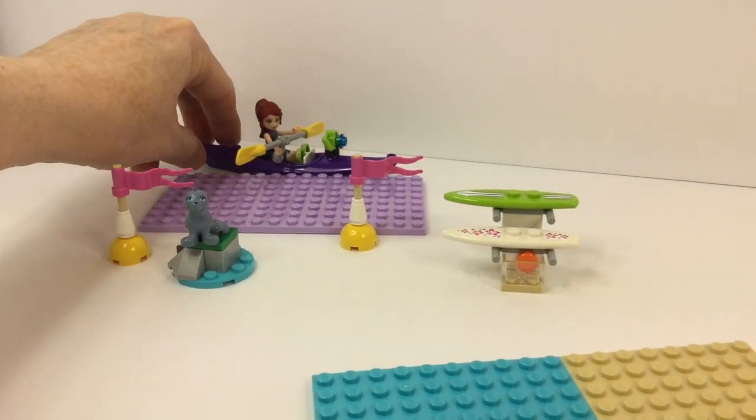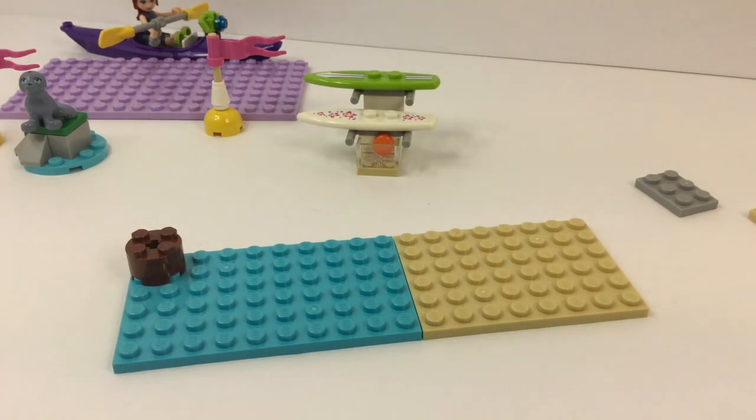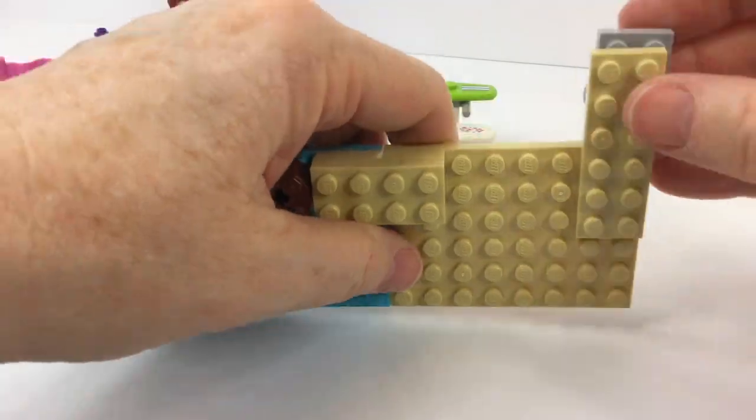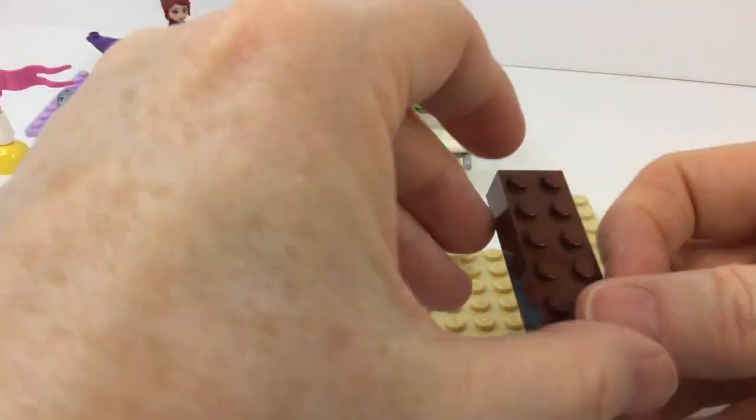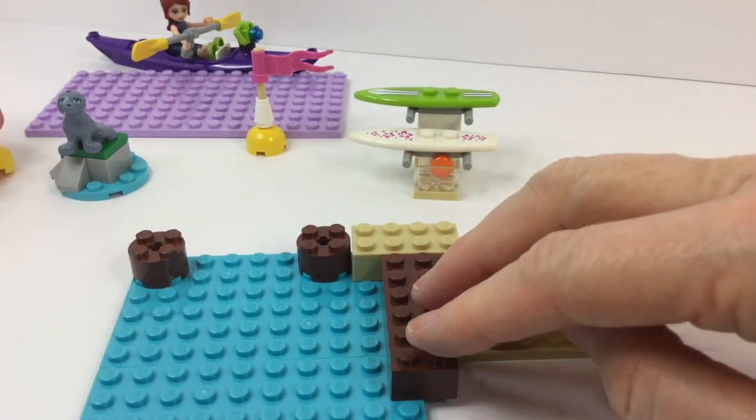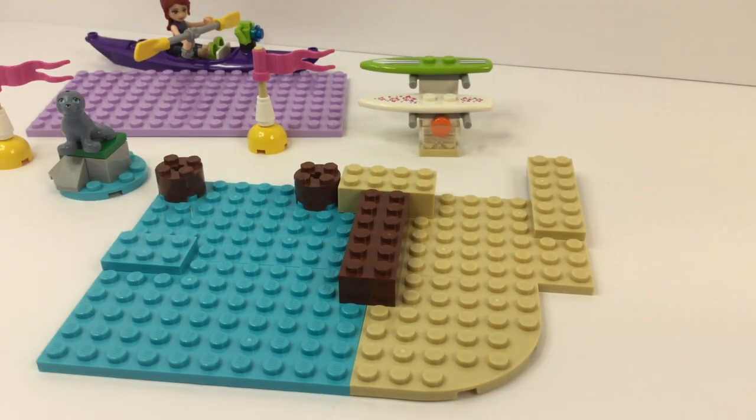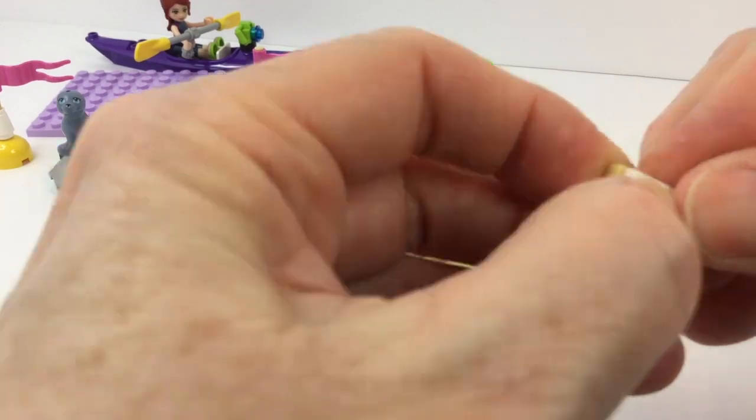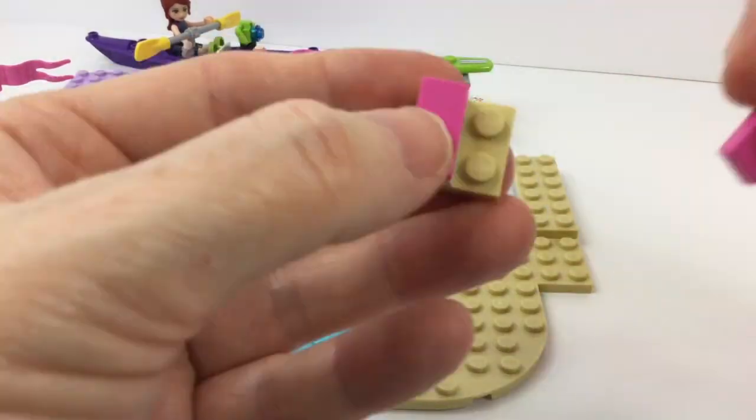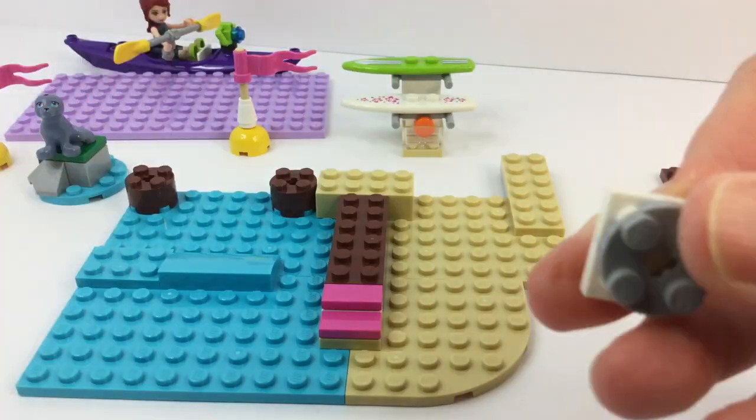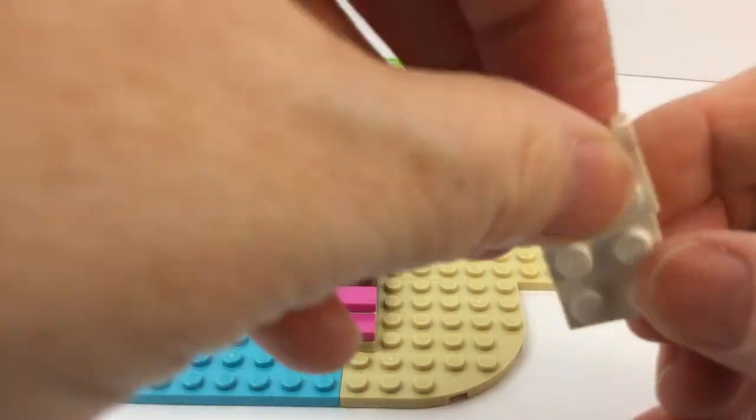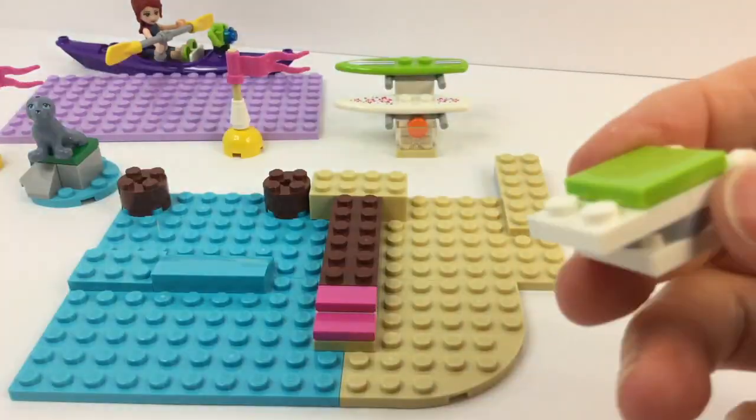So we're gonna let Mia go over here in the backwater and she's just gonna have a little adventure while we get started building the surf shop. But first we have to build some surf and turf, so the blue pieces of course are the water and the tan pieces are the sand. And look at how cute they even put like a little wave piece, I love that, that's awesome.